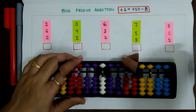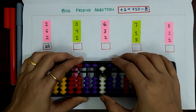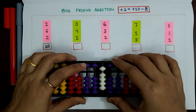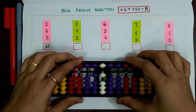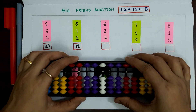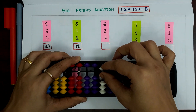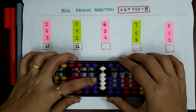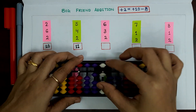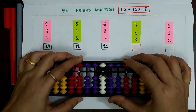Next example: 6 plus 3 plus 2. Apply plus 10 minus 8. Answer is 11. Next example: 6 plus 3 plus 2. Apply plus 10 minus 8. Answer is 11.